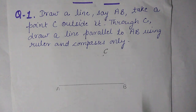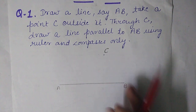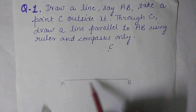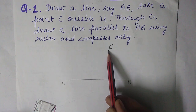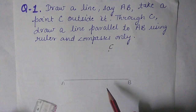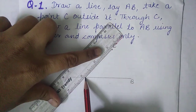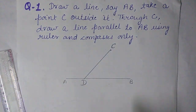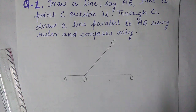Parallel lines are lines in which the perpendicular distance remains the same everywhere — they never intersect each other. So as this point is C and we have to draw a line through C, first join this point C to any point on AB. Say that point be D.